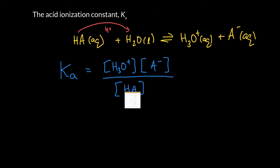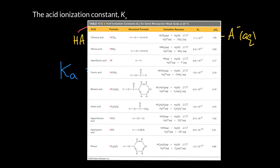Let's look at a table from the textbook of some common weak acids. Chlorous acid has a Ka of 1.1 × 10⁻², which is actually quite large for a weak acid. Hydrofluoric acid is 10⁻⁴. Acetic acid — the acid in vinegar — is 10⁻⁵. Phenol, found in coal tar soap with that very antiseptic smell, has a Ka of 10⁻¹⁰. The last column shows pKa, the negative log of the equilibrium constant. The ionization reactions all show the acid reacting with water, donating a proton to make hydronium and the conjugate base.